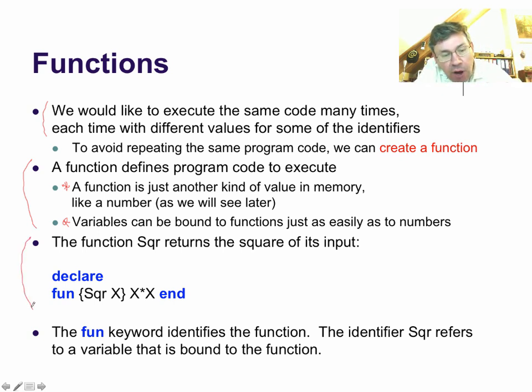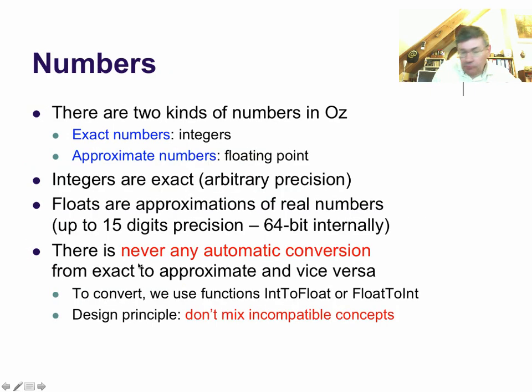The function sqr here returns the square of its input. It uses the keyword fun, f-u-n, and it ends with the keyword end. It has here in the header sqr, delimited by braces with an argument x, and the body of the function is an expression that calculates the result of the function.